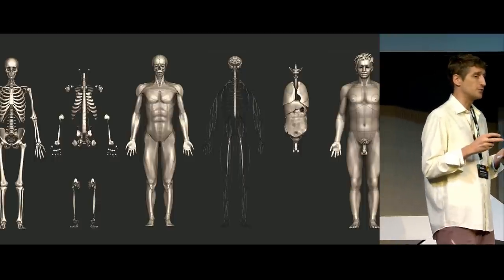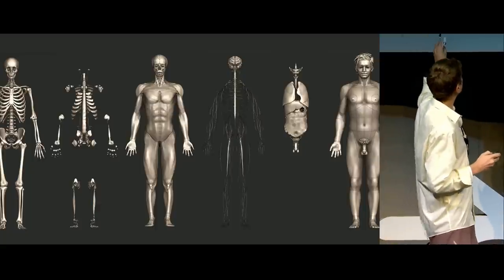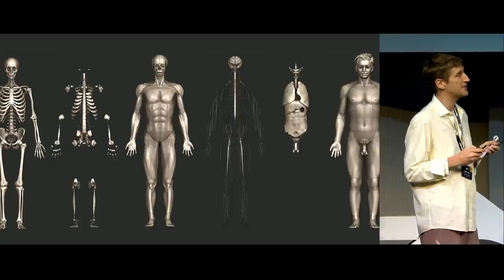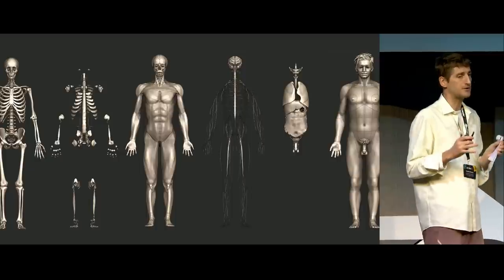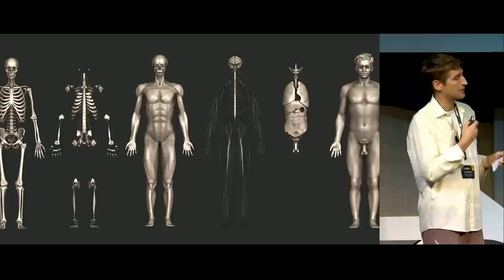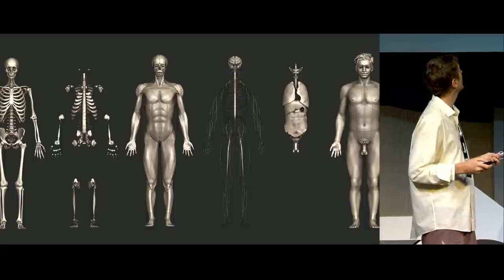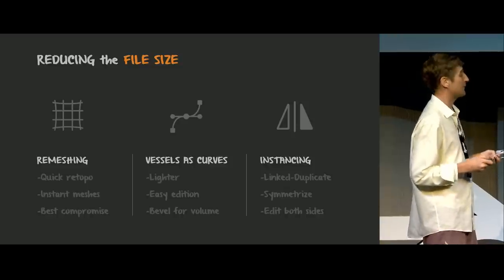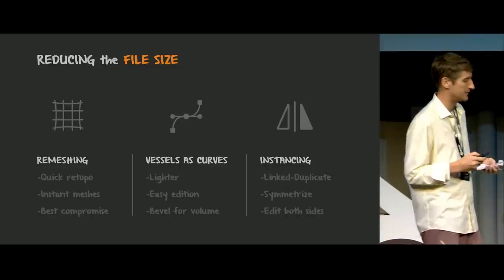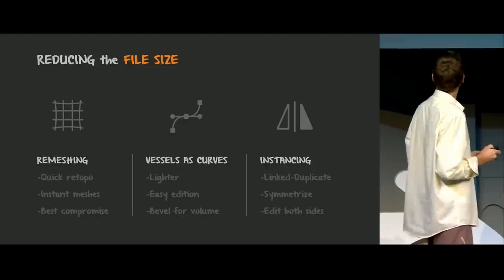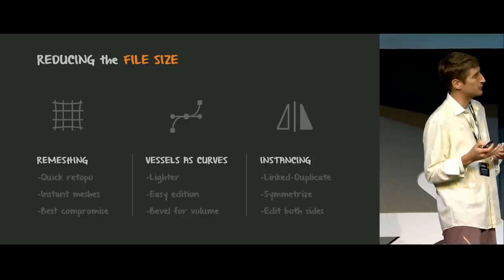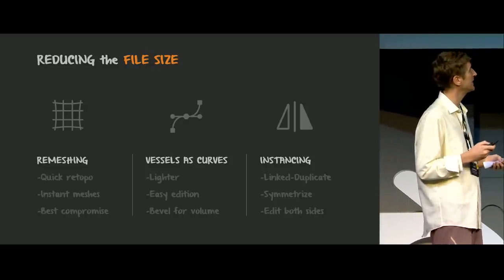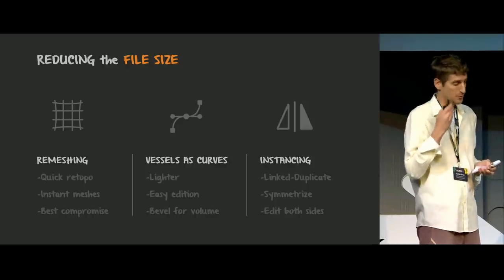I gathered everything inside the file, combined the two models, and completed it. This includes the ligaments — what we call arthrology, studying the joints. The nerves were also missing. I adapted everything to fit the two models together, segmenting the skin because there are regions that each have a specific name. I started to have something usable inside Blender. Because the meshes are very heavy on the original files, there were three techniques: remeshing, converting all vessels into curves — nerves, arteries, and veins — which makes them much more editable and light, and then instancing and mirroring all the symmetrical parts, which basically divides the file weights by two.